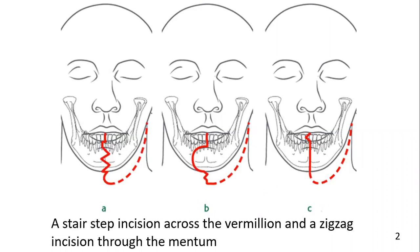The use of a lip splitting incision with a later extension into the neck incision allows for the elevation of a cheek flap and exposure of the hemimandible. The most common form of lip split utilizes a stair step incision across the vermilion and a zigzag incision through the mandible, used to best camouflage the scar.